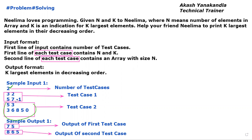In the second test case, capital N is 5, so we have 5 elements: 3, 6, 8, 5, and 0. We need to output the 3 largest elements in decreasing order. The largest is 8, then 6, then 5. Hence the output is 8, 6, and 5.